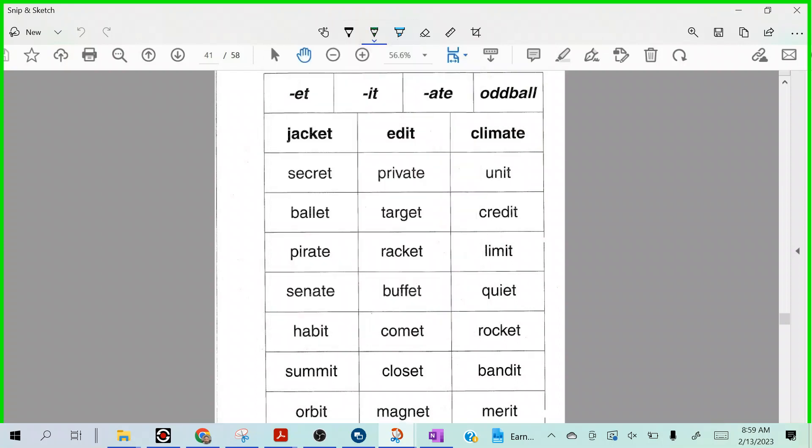Okay, so we have jacket, edit, climate, secret, private, our unit, ballet, target, credit, pirate, racket, limit.